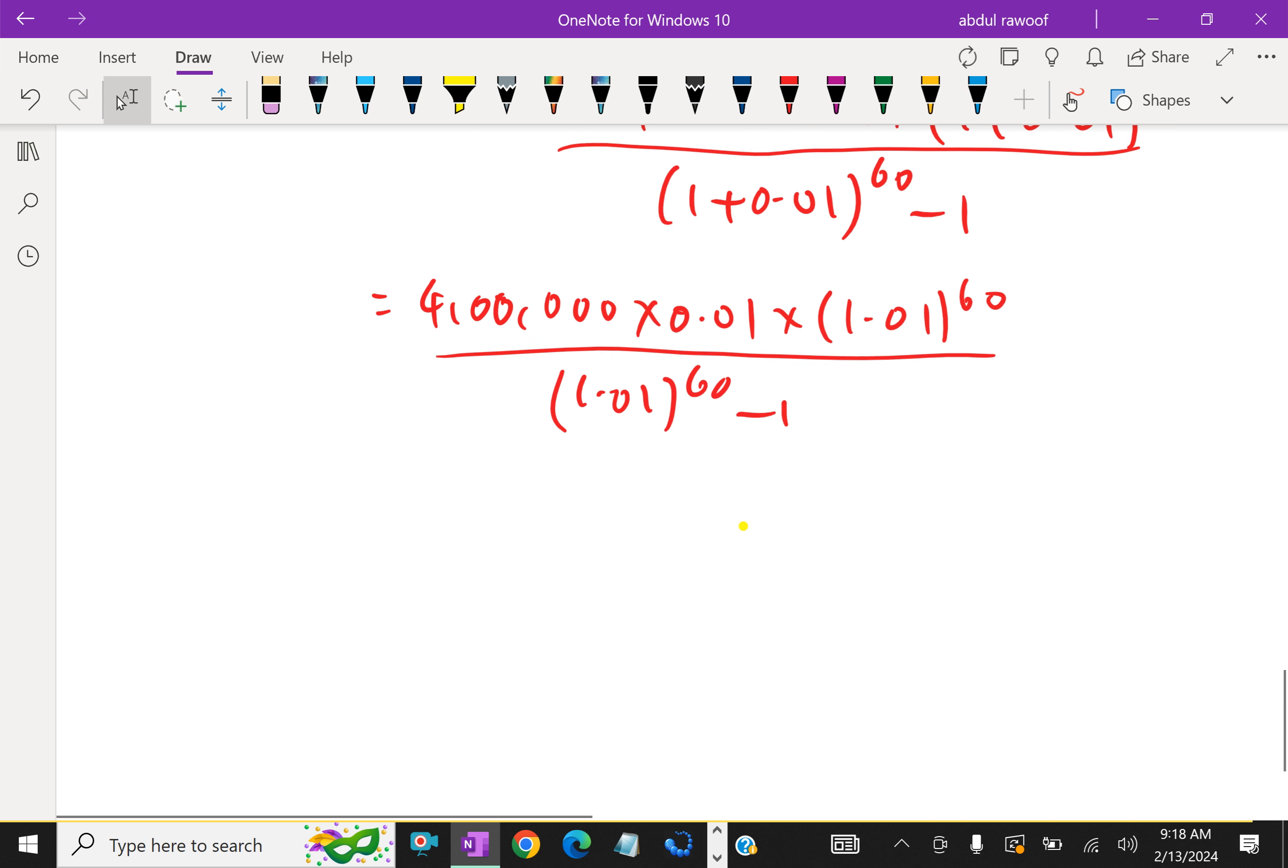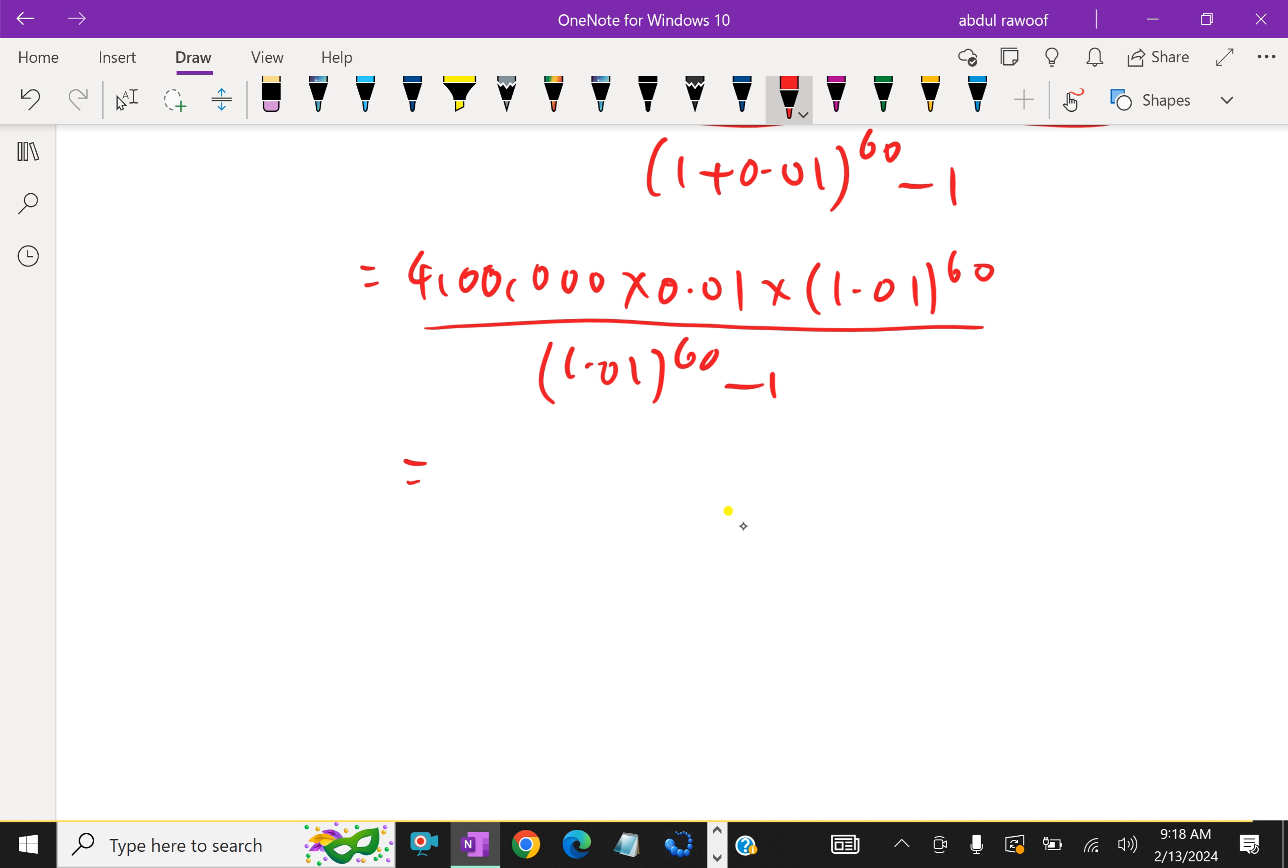Which gives approximately, by using calculator, which gives rupees 8,896 approximately. EMI per payment is... that is, EMI is equal to 8,896 she has to pay.